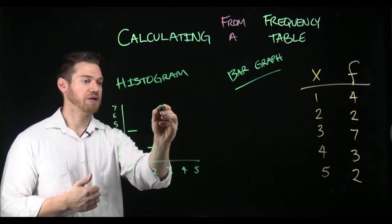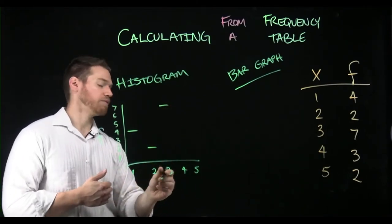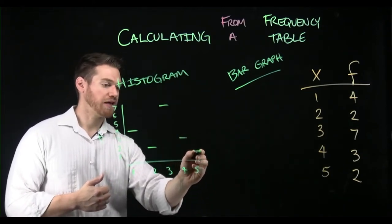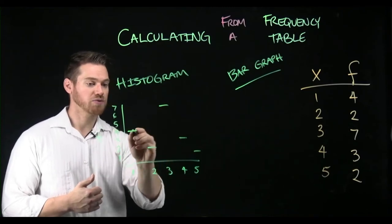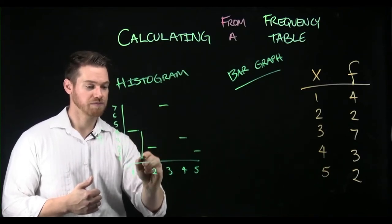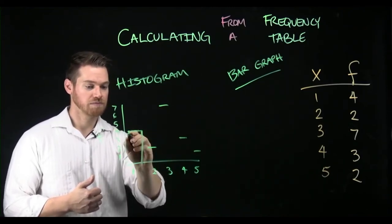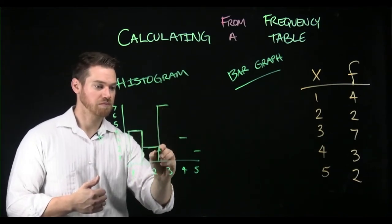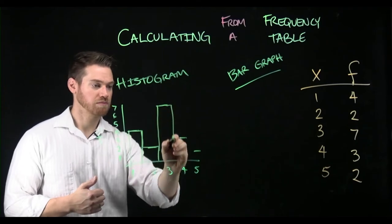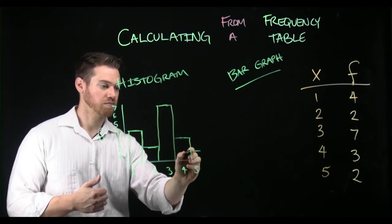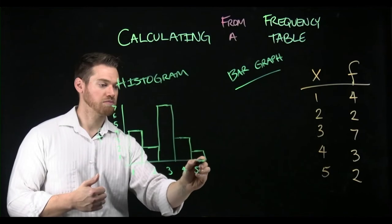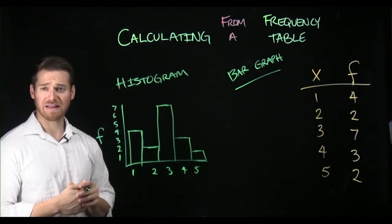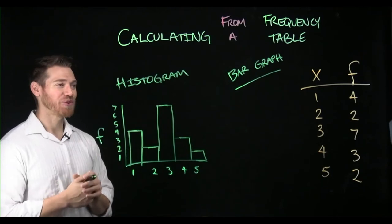We'd go up to seven for the value three, up to three for the value four, and up to two for five. We would make all these bars wide enough that they touch, and that would be something like a histogram — forgive the fact that I can't draw very well.